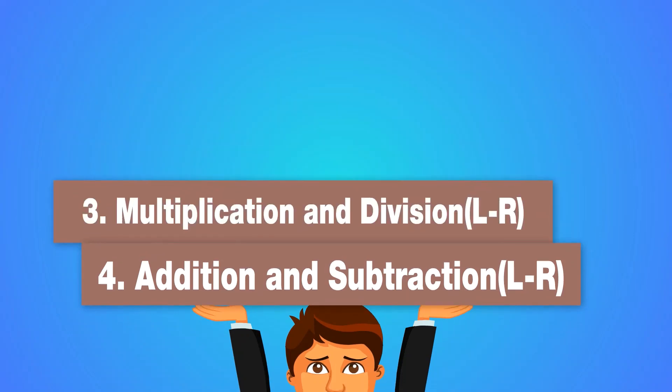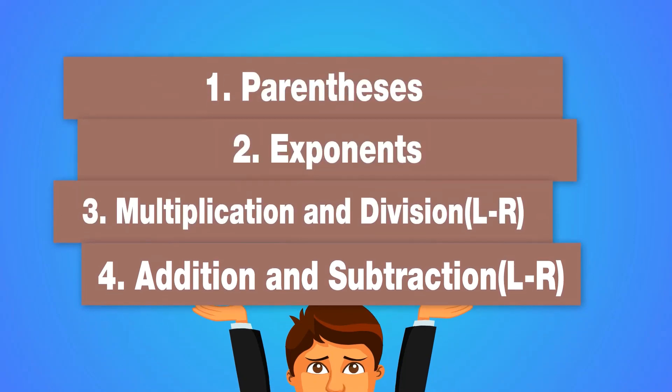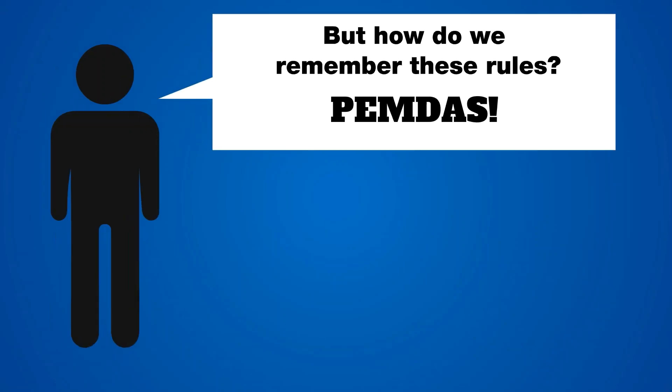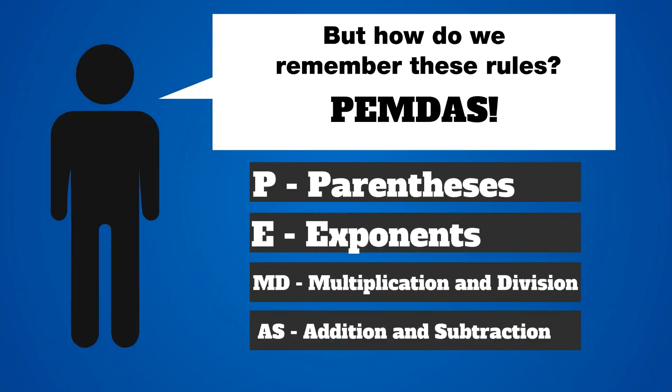These rules tell us the order that we should do operations in. First we should do parentheses, then exponents, and then multiplication and division left to right in the order that they come up in. And then same thing with addition and subtraction left to right.